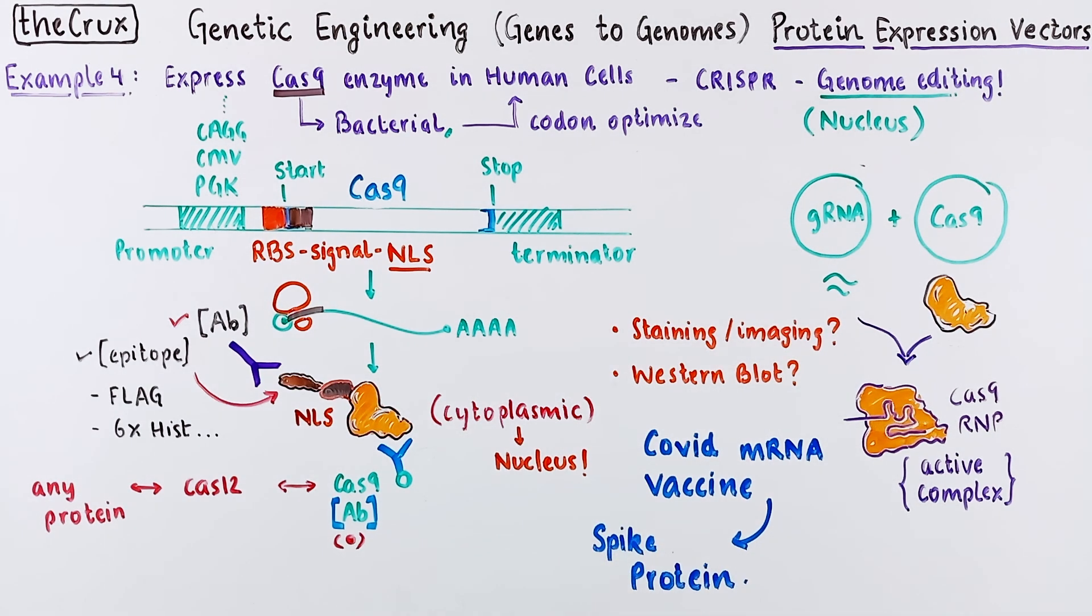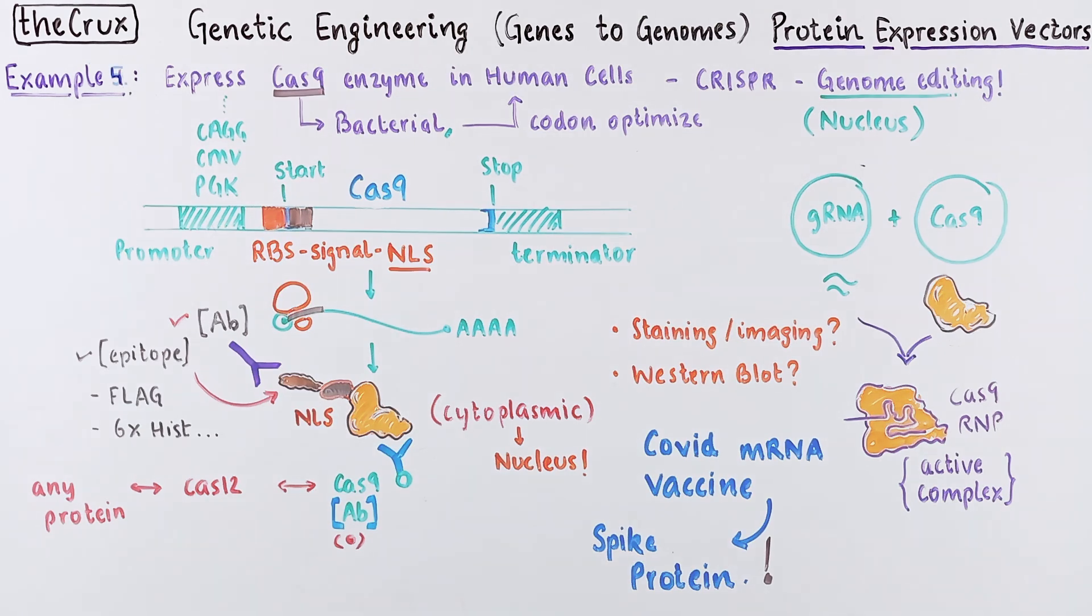Similar to this heterologous expression in human cells, COVID mRNA vaccine that results in spike protein is yet another example of a human-specific protein expression system. COVID mRNA vaccine is not a vector-based system but the architecture is very similar, with some fancy features. A video on it is linked down in the description in case you're interested.